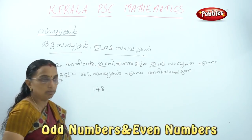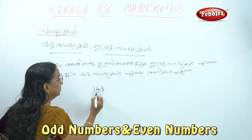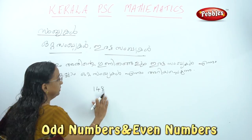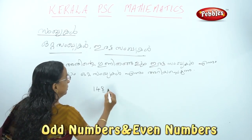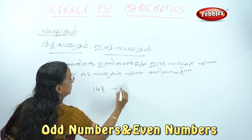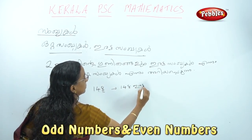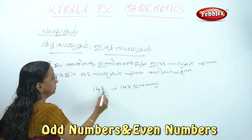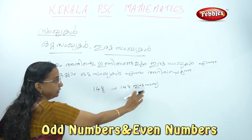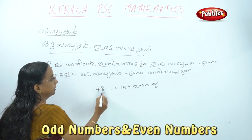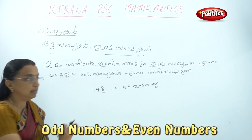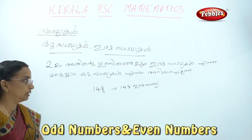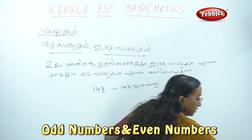All of this is the other method. In 148, we have 8. Because in 148, we have 8. That means we have 8.